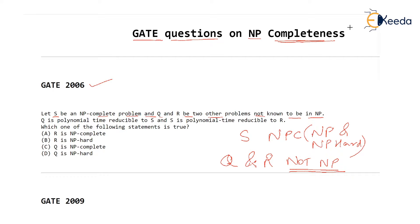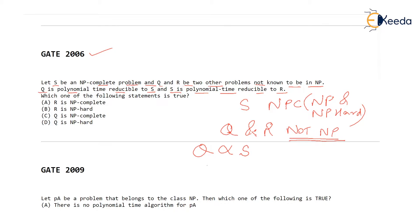The next statement is that Q is polynomial time reducible to S. And S is polynomial time reducible to R. Then they ask which of the following statements is true — only one of these statements is true. Before we read the options, let's see what this reduction means.